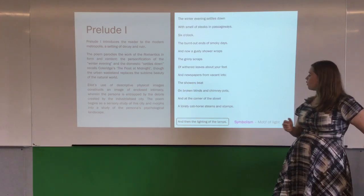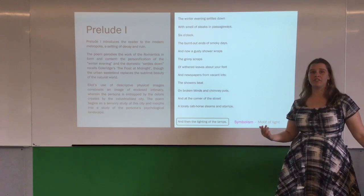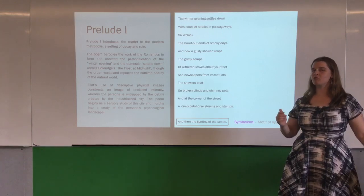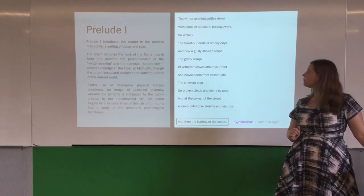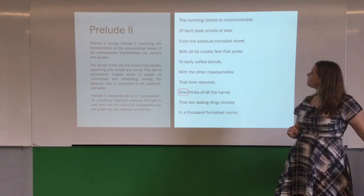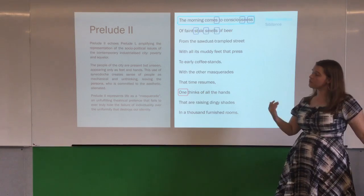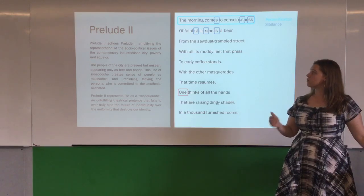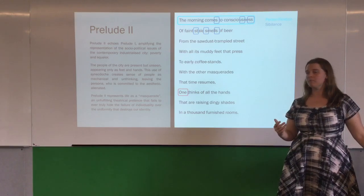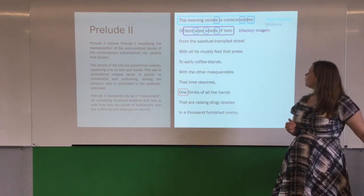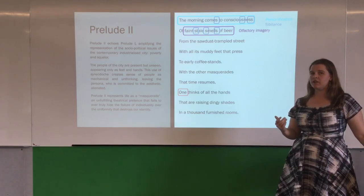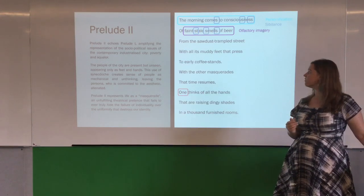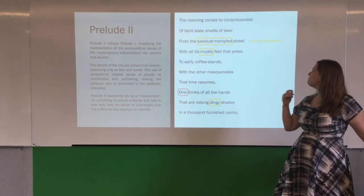We also end with the important symbol of the lighting of the lamps, which is an important symbol in T.S. Eliot's poetry, so pay attention to the motif of light in this poem. In Prelude number two, we again open with personification and sibilance. Prelude number two is very much an extension of Prelude number one. We also see the olfactory imagery — though it's not the smell of steaks in passageways, it's now the faint, stale smells of beer. Again, emotive imagery.